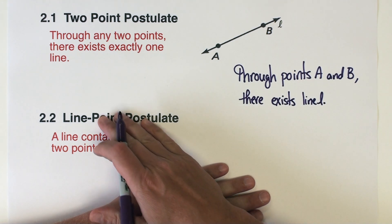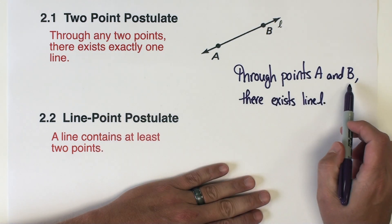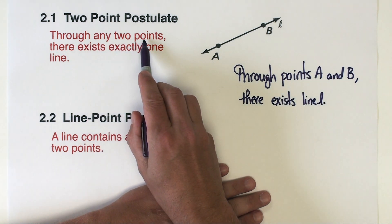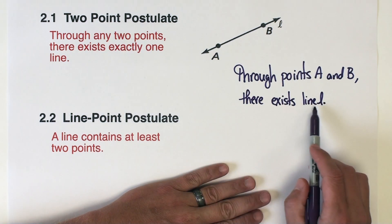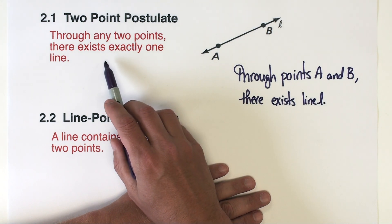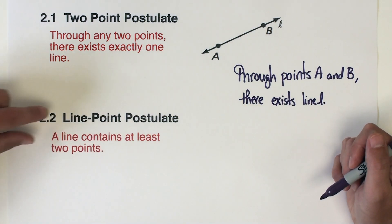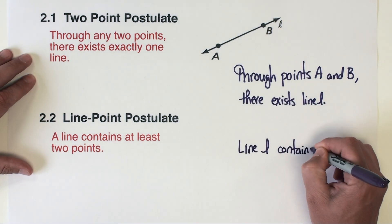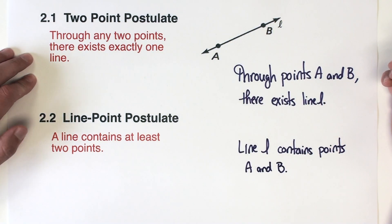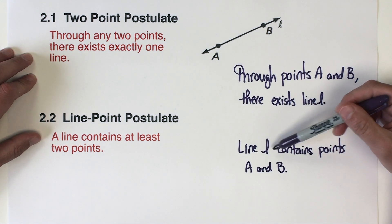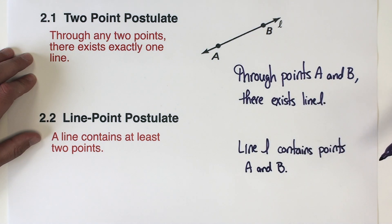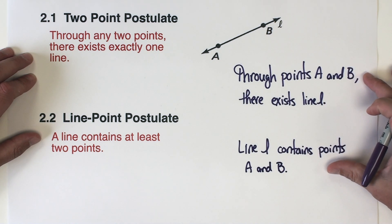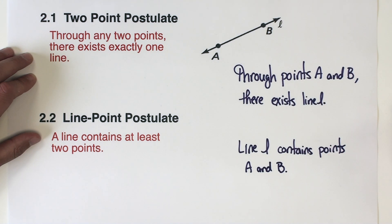For the two-point postulate I wrote: through points A and B there exists line L. Now for the line-point postulate I might write: line L contains points A and B. You can see the differences between the two statements — it's really just the order in which the information in the diagram is presented within the statement.